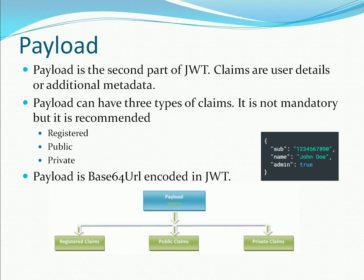The second part in JWT is the payload. The payload is one of the most important parts. Here we have the claims and other metadata information. The payload can have three types of claims. The JWT community recommends following these, though it is not strictly mandatory. The three types are: registered claims, public claims, and private claims. The payload is also Base64 encoded and included in the JWT token.